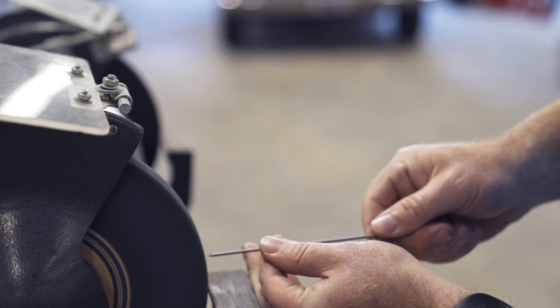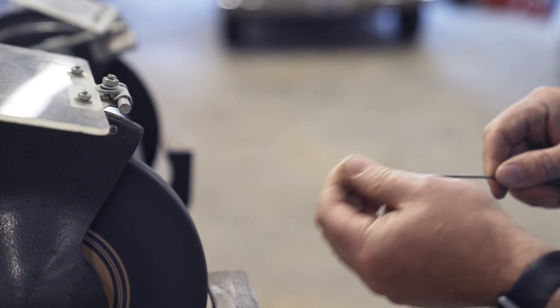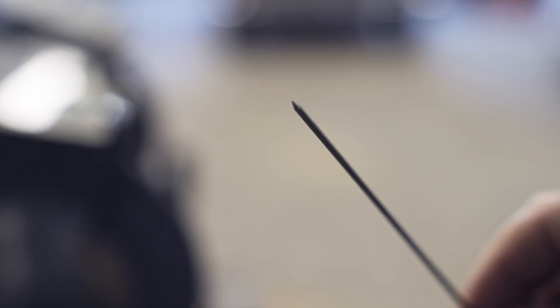When I have it ground to the angle that I would like, I point the tip straight at the grinder and barely touch it, the lightest I can possibly touch it, just to knock the very tip off. And that's it, that's what you end up with.